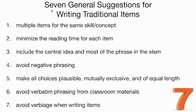To start us off, let's look at seven general suggestions for writing better multiple choice or traditional items. First, make sure that we have multiple items for the same skill or concept. Second, minimize the reading time for each item. Third, include the central idea and most of the phrase in the stem. Fourth, avoid using negative phrasing. Fifth, make all choices plausible, mutually exclusive, and of equal length. Sixth, avoid verbatim phrasing from classroom materials as often as we can. And seventh, always try to avoid verbiage when writing items.